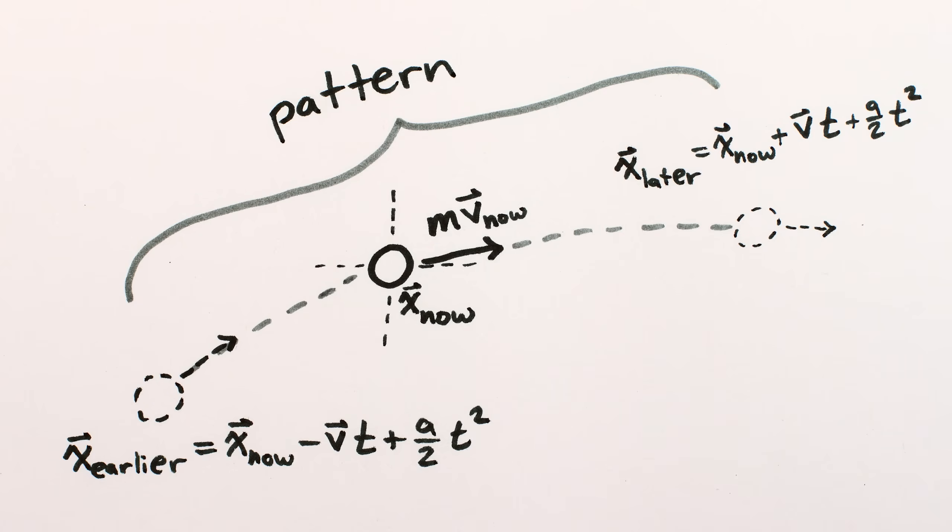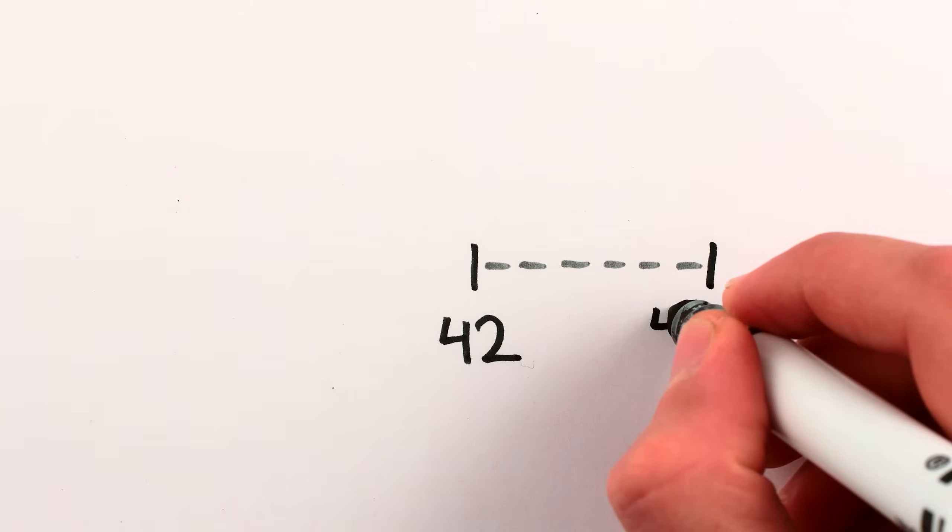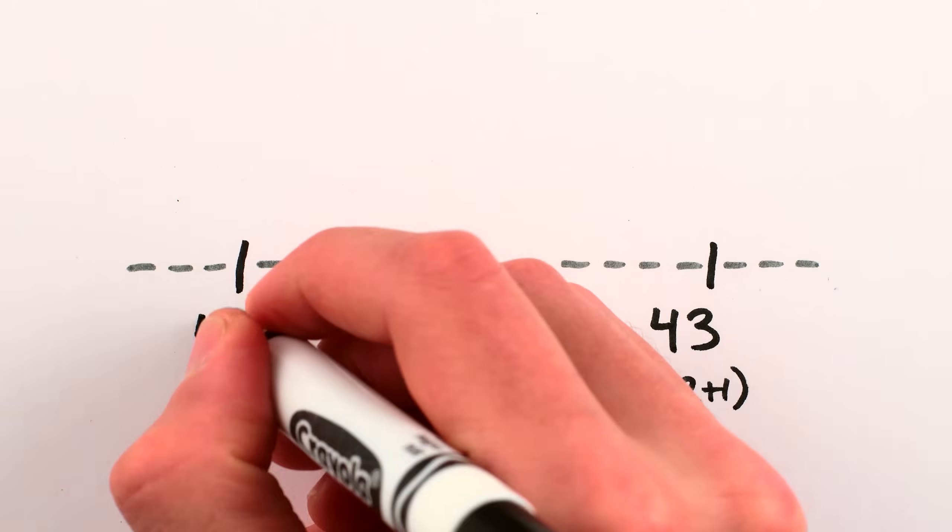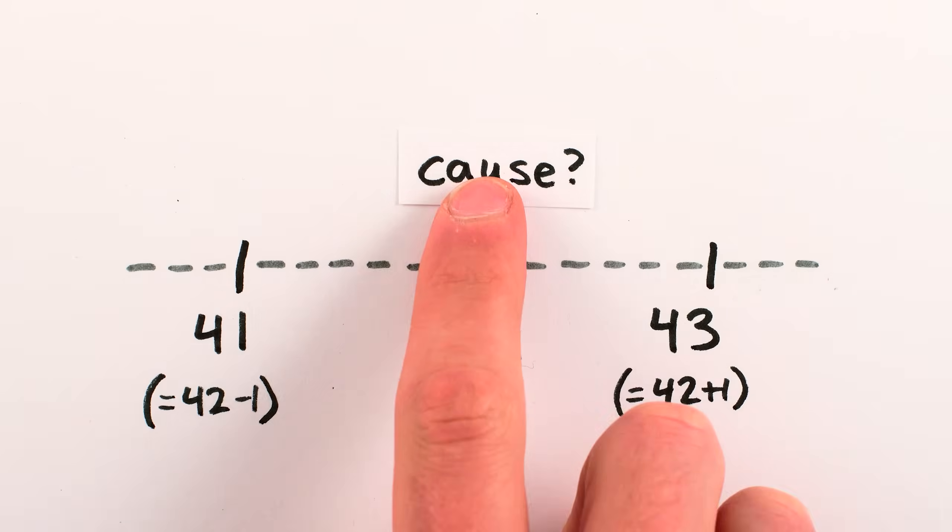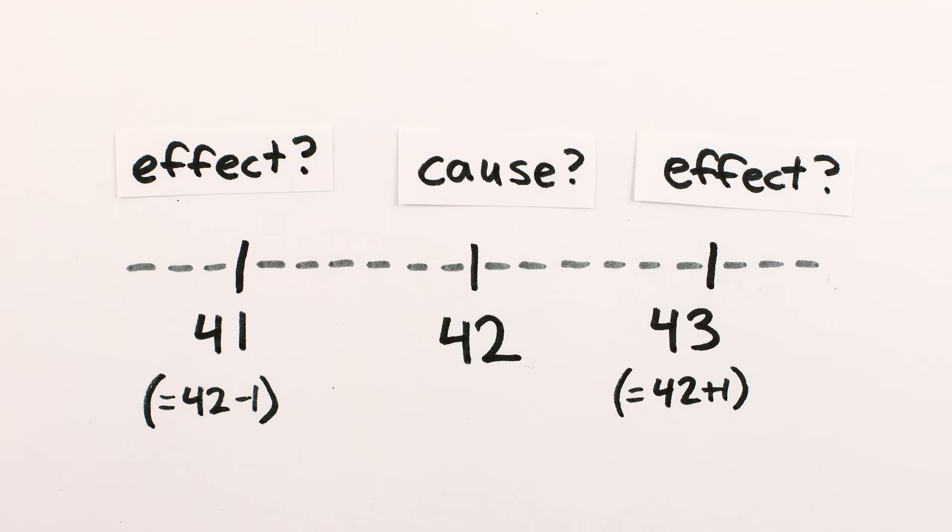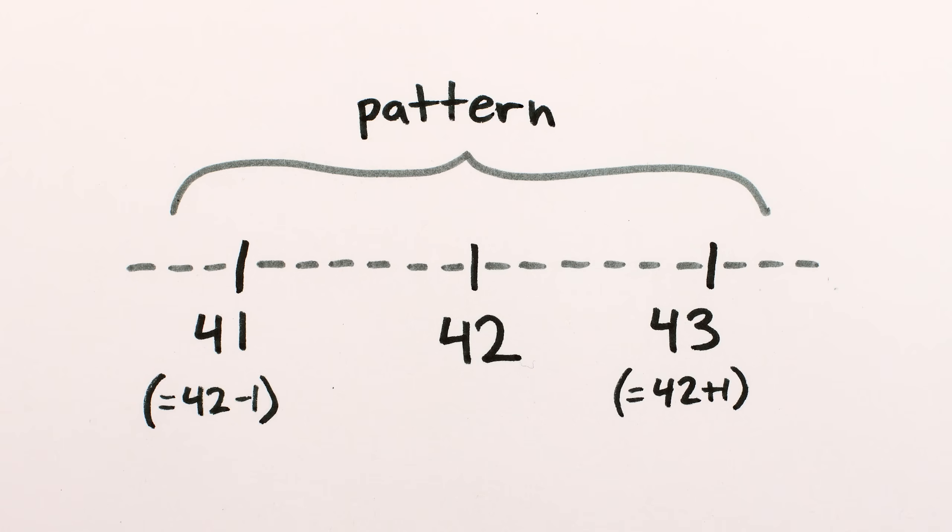There's just a pattern that particles follow, kind of like how the integer after 42 is 43 and the integer before it is 41. But 42 doesn't cause 41 or 43, there's just a pattern traced out by those numbers.